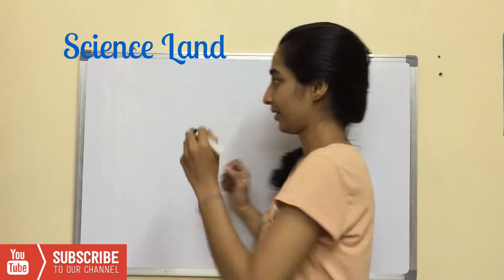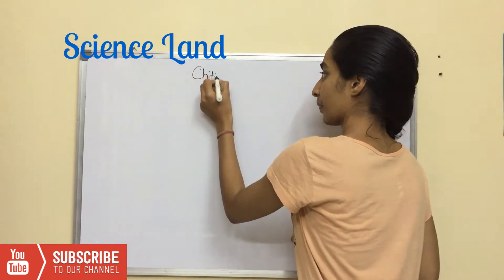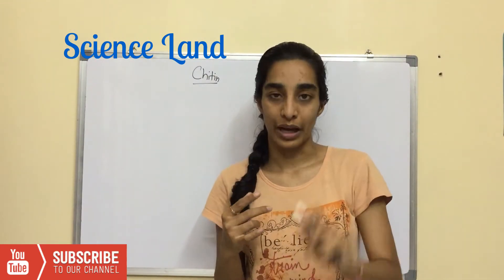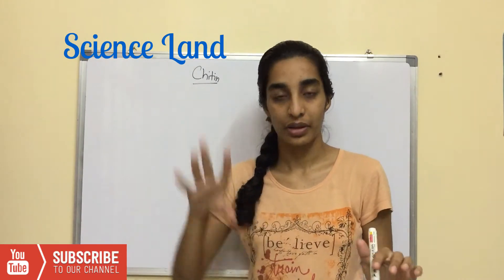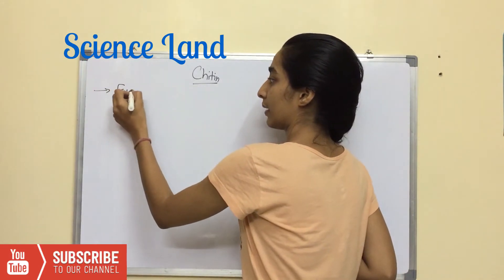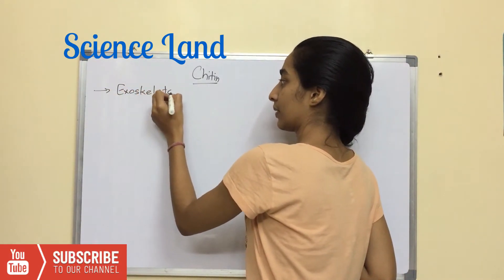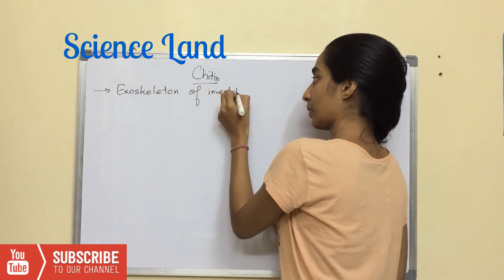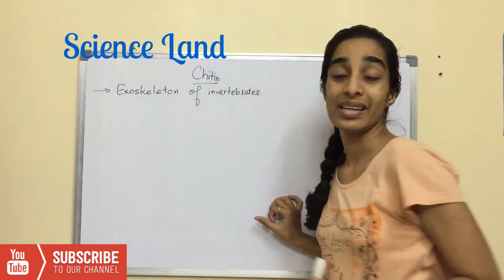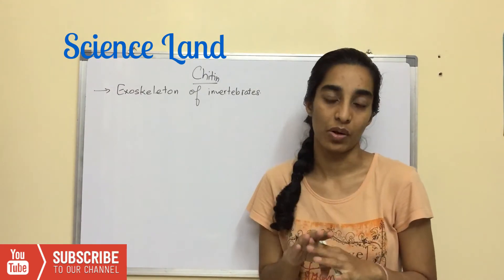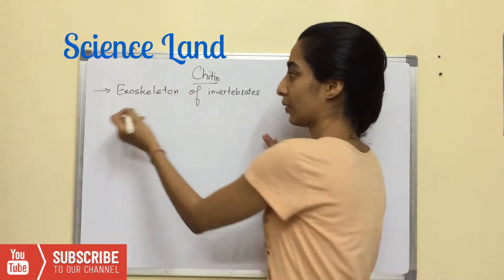Welcome back friends. Today's topic is chitin. Like cellulose, which is found in plant cell walls and is a primary structural component, chitin is found in the exoskeleton of invertebrates. It is also a major component in the cell wall of fungi and algae.